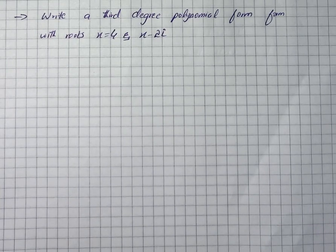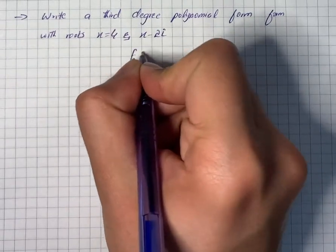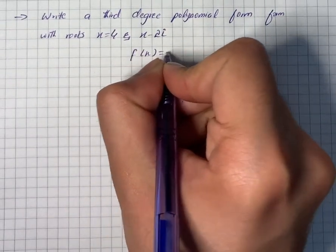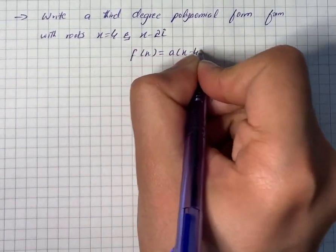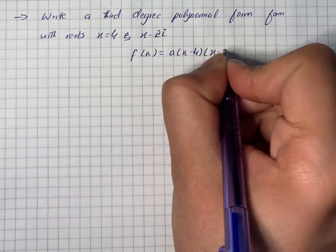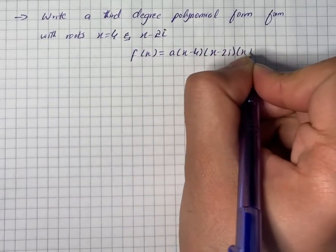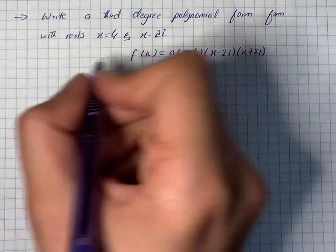Using 4, 2i, and -2i, the third degree polynomial function could be given as f(x) = a(x - 4)(x - 2i)(x + 2i). Now we will expand.